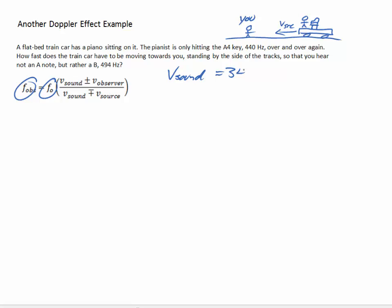So in this problem, we know F_obs and we know the original frequency, and of course we know the speed of sound, so we're going to be using 343 m per second as the speed of sound.